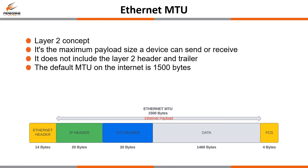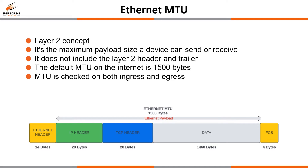There are however some situations where it is beneficial, which we will discuss later. MTU is checked on both ingress and egress interfaces, and if the Ethernet MTU is exceeded the frame will be dropped. Layer 2 doesn't have any fragmentation capabilities as it doesn't contain any fragment field in the header like an IP header does.